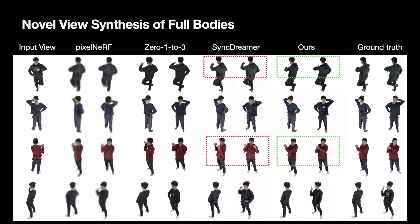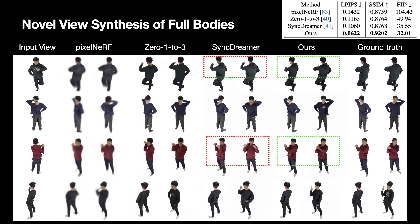Our method could also be applied to novel view synthesis of full bodies. With explicit conditioning on SMPL-X vertices, our method generates full-body human images in more accurate body poses compared to the baselines. Quantitatively, our method demonstrates a considerable improvement over all the baselines across all metrics.